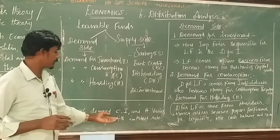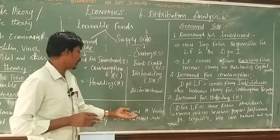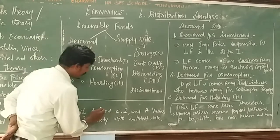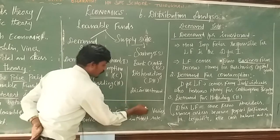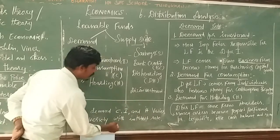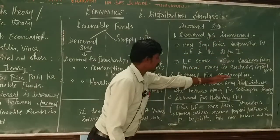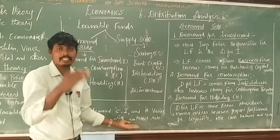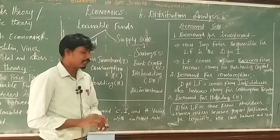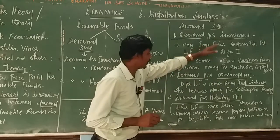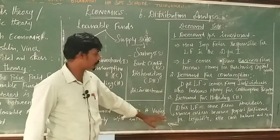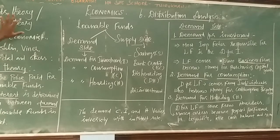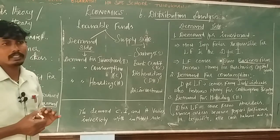To summarize: C means consumption, I means investment, and H means hoarding. The demand for consumption, the demand for investment, and the demand for hoarding all vary inversely with the rate of interest. The rate of interest determines all these things in loanable funds theory. The diagram for this theory will be seen in the next video.